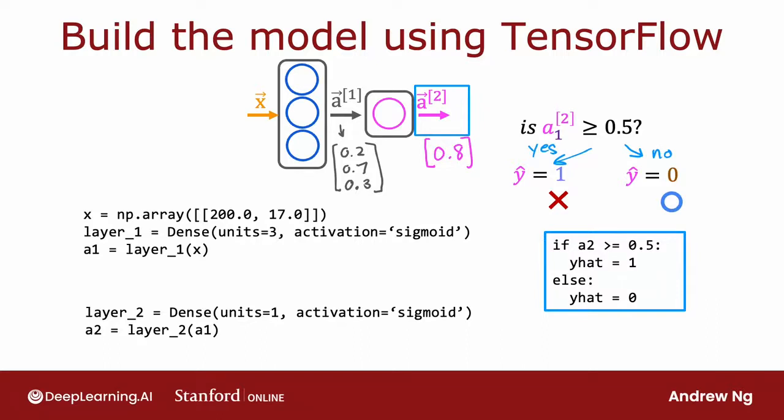There are some additional details I didn't go over here, such as how to load the TensorFlow library and how to load the parameters w and b of the neural network. But we'll go over that in the lab, so please be sure to take a look. These are the key steps for forward propagation and how you compute a1 and a2 and optionally threshold a2. Let's look at one more example, and we're going to go back to the handwritten digit classification problem.